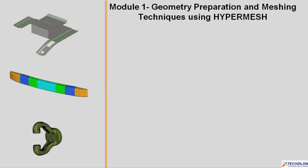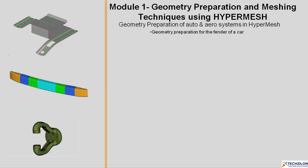Module 1 will consist of geometry preparation and meshing techniques using HyperMesh. This will include geometry preparation of auto and aero systems, covering geometry preparation for the fender of a car, geometry cleanup for the center pillar of a car, and geometry preparation for the wing panel of an aircraft.